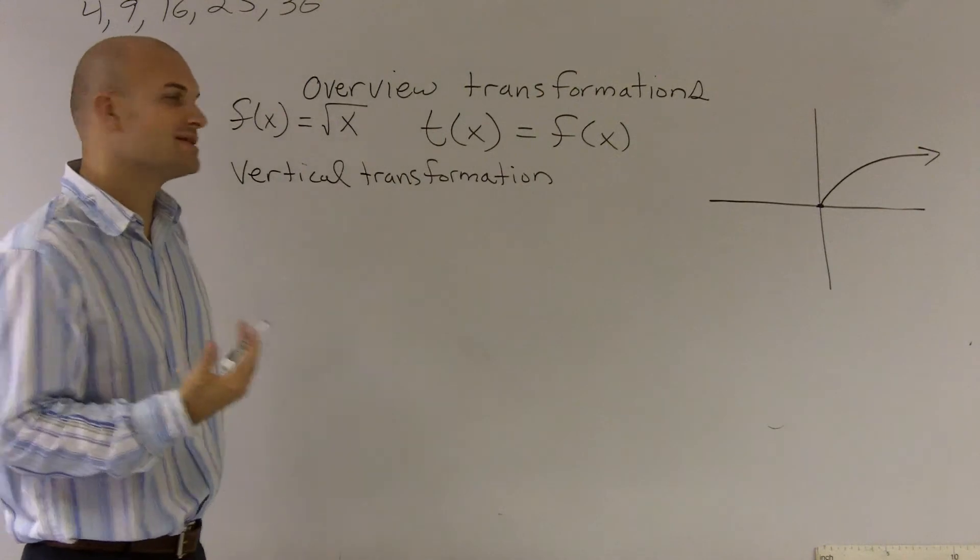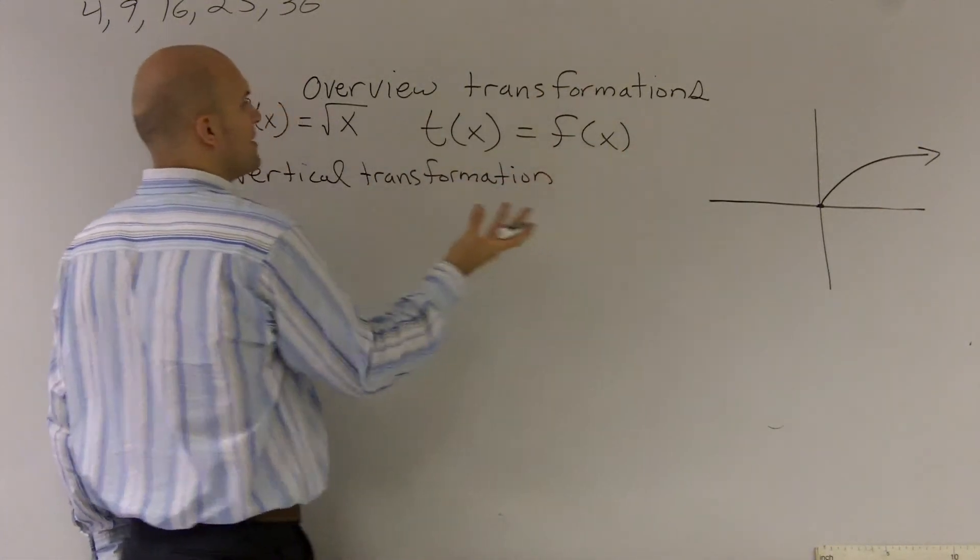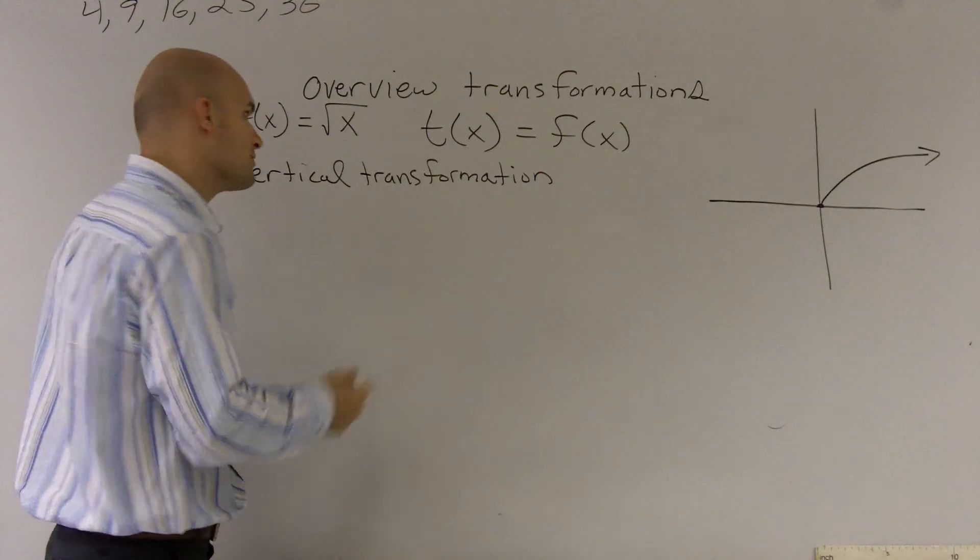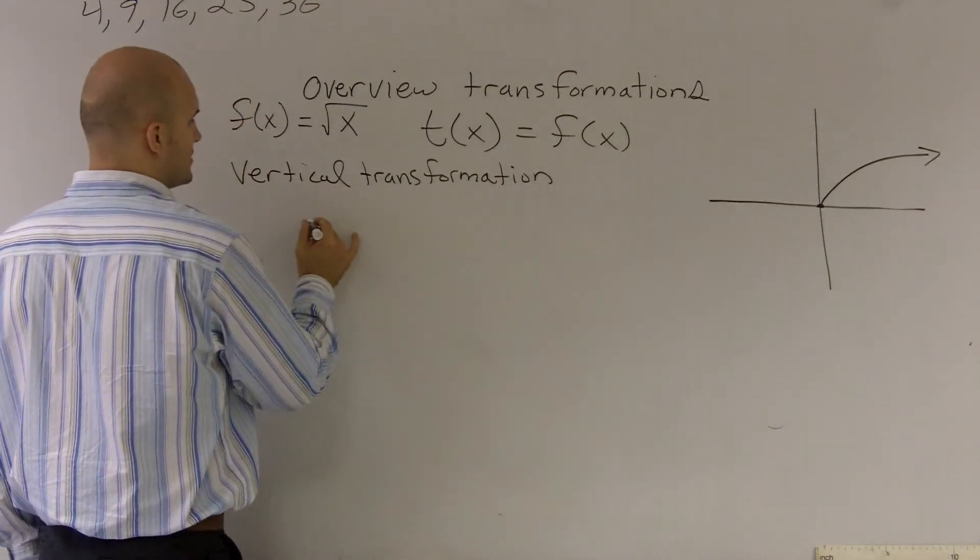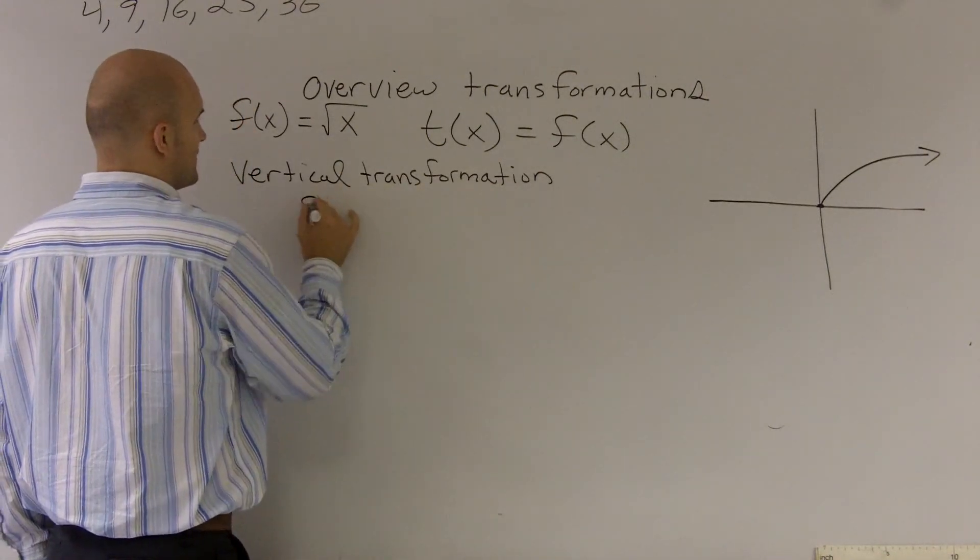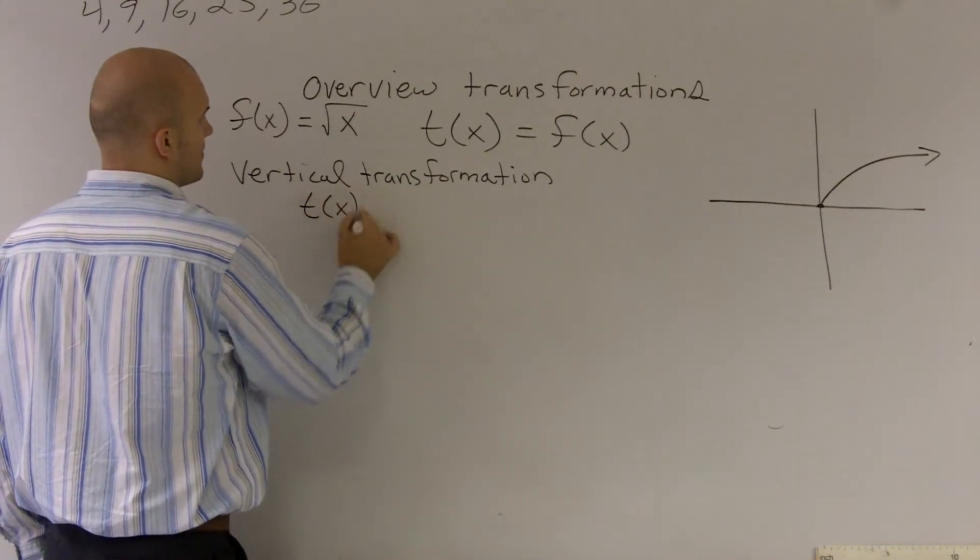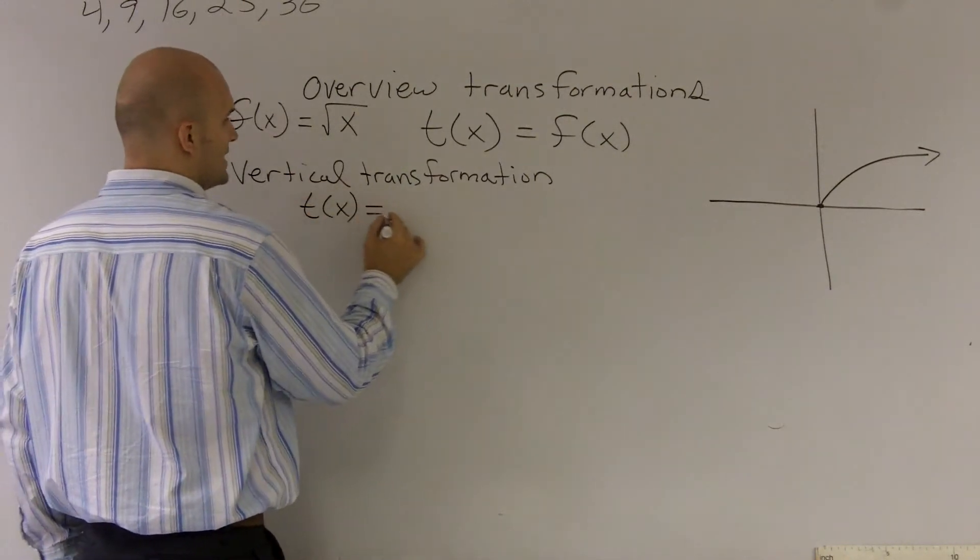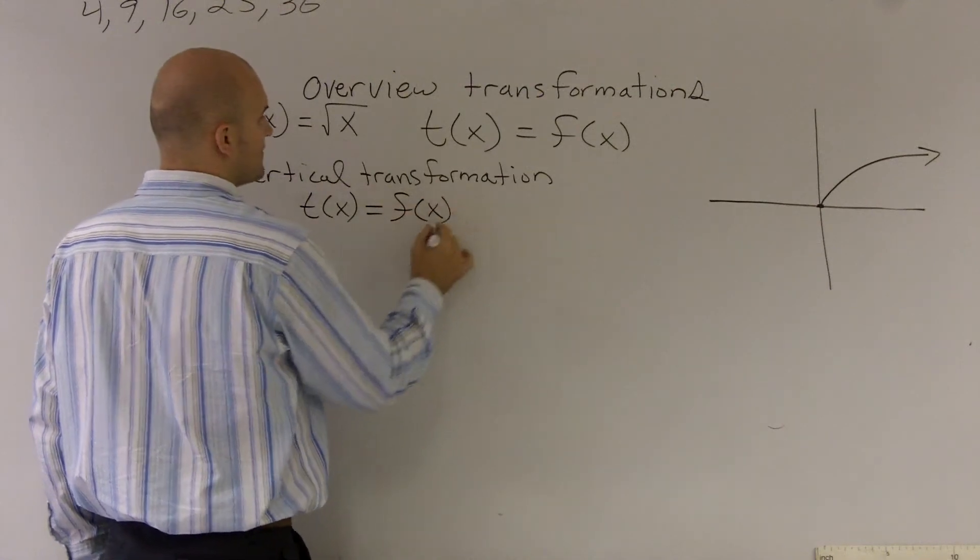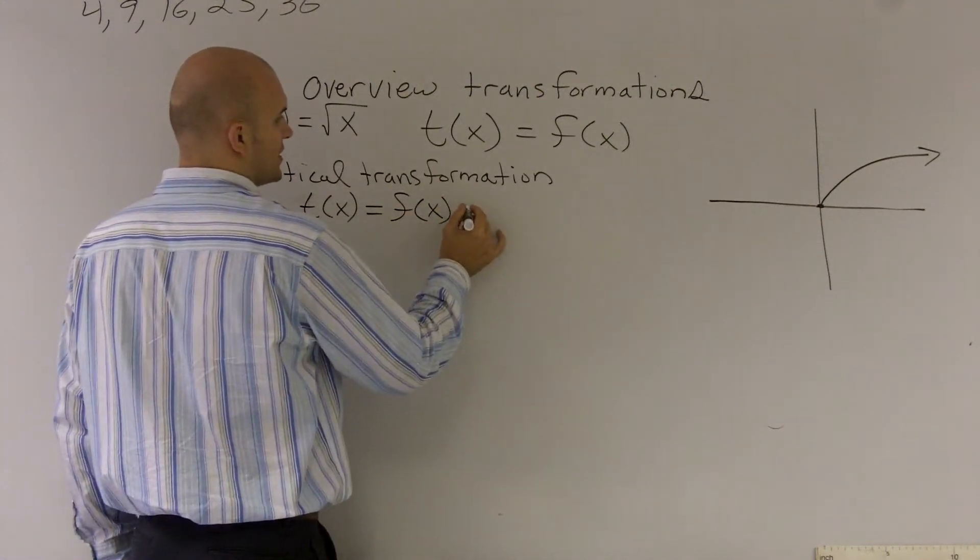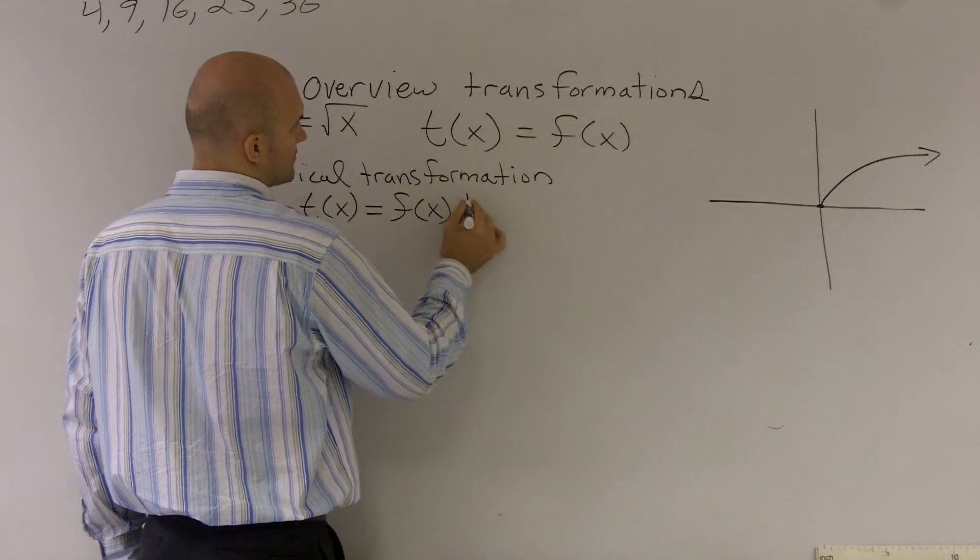So what we're going to do is, how are we going to represent a transformation of our original f(x)? How can we represent a shift either upwards or downwards? Well, the way that we can do that is if we write transformation of x equals my function f(x) and either, we'll just say, plus c.